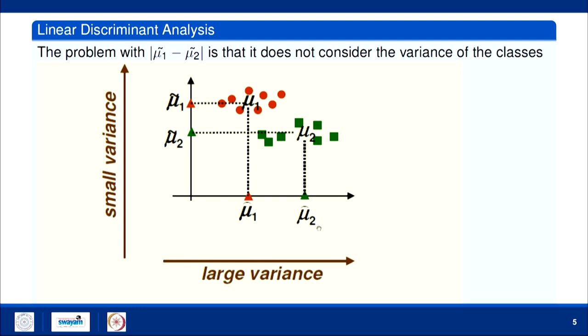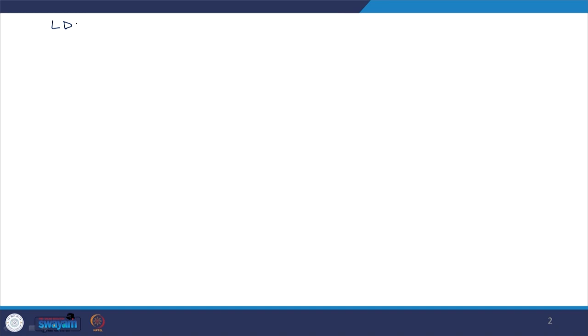In the horizontal direction, the data is not well separated because there is bigger variance compared to the vertical direction where variance is quite small. So I have to normalize the criterion — the means should be far away from each other after projection, normalized by the variance or scatter. This is how we normalize it.